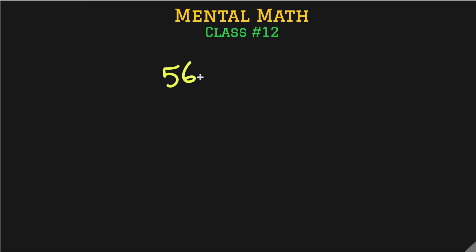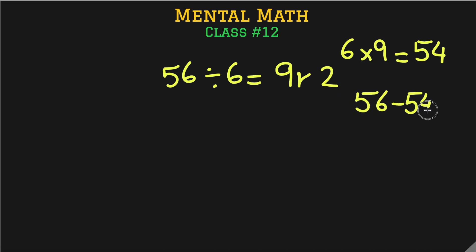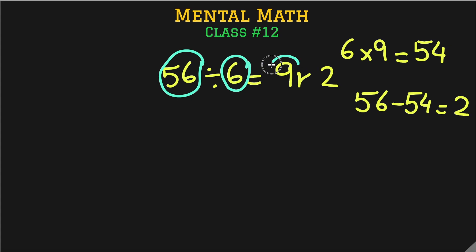Now let's look at 56 divided by 6. We know 6 multiplied by 9 is 54, which is the closest, so 9 is the quotient. But it's not a perfect division — 56 minus 54 gives a remainder of 2. So the answer is 9 remainder 2. To recap: 56 is the dividend, 6 is the divisor, 9 is the quotient, and 2 is the remainder.